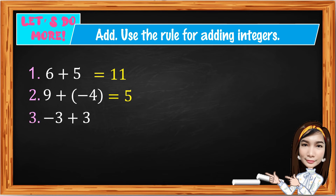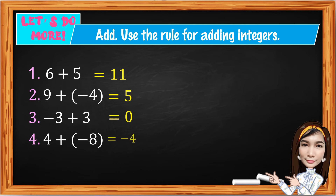Number 3: Negative 3 plus 3 is the same as 3 minus 3, which equals 0. Number 4: 4 plus negative 8. They are unlike signs, so subtract the absolute value: 8 minus 4 gives 4. Since negative 8 is greater than positive 4 in absolute value, the answer is negative 4.